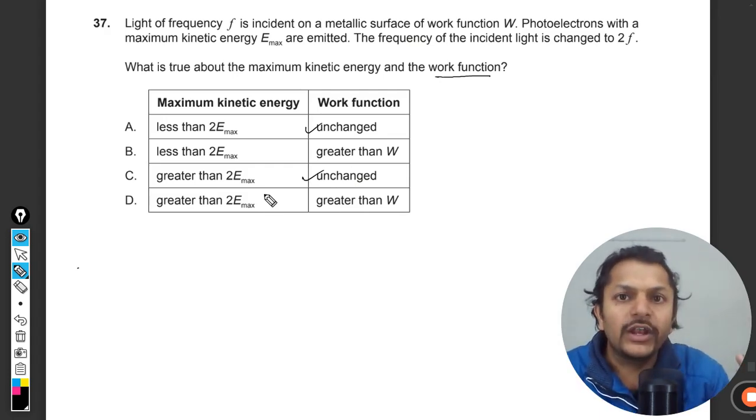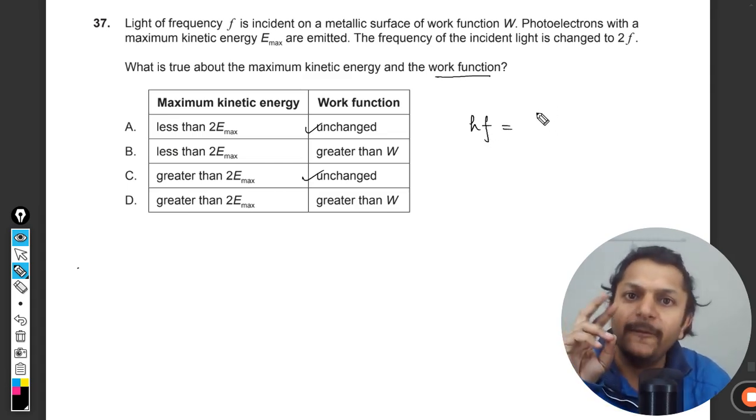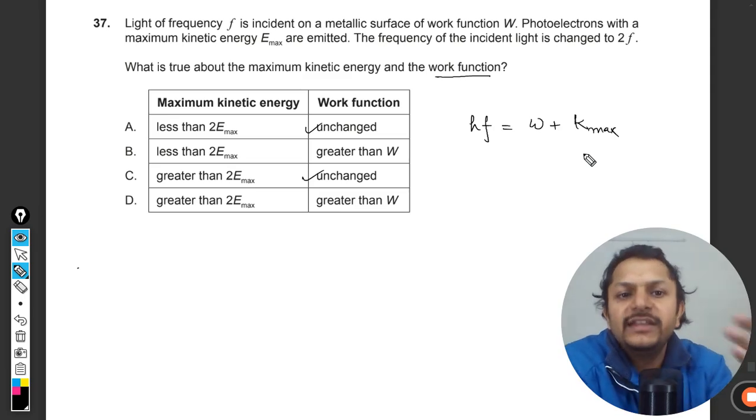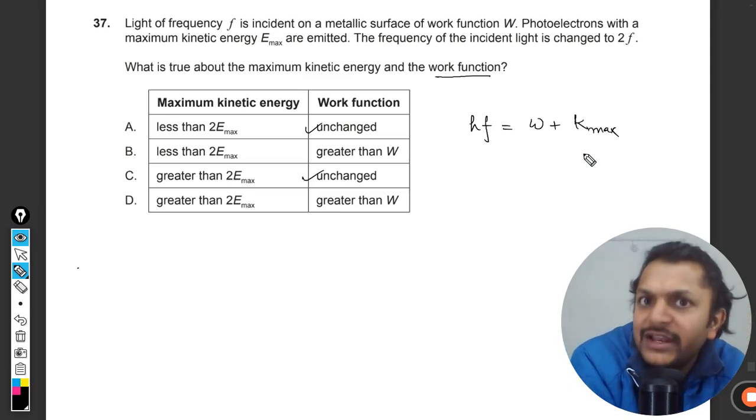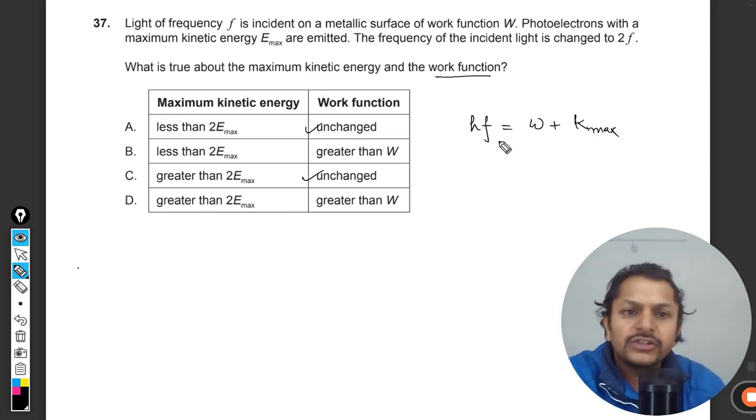The light which is falling is 2f now. Einstein has said that the energy of a photon is used at two places. It will be used for the work function and the rest of the energy will result as the maximum kinetic energy for the electrons. So this is Einstein's photoelectric equation.